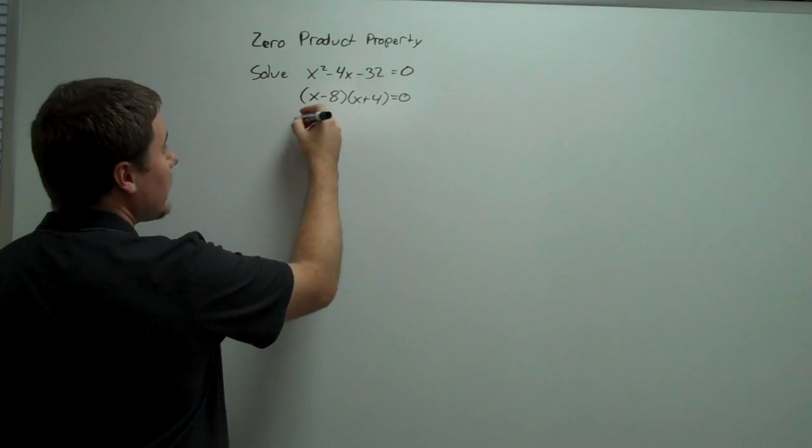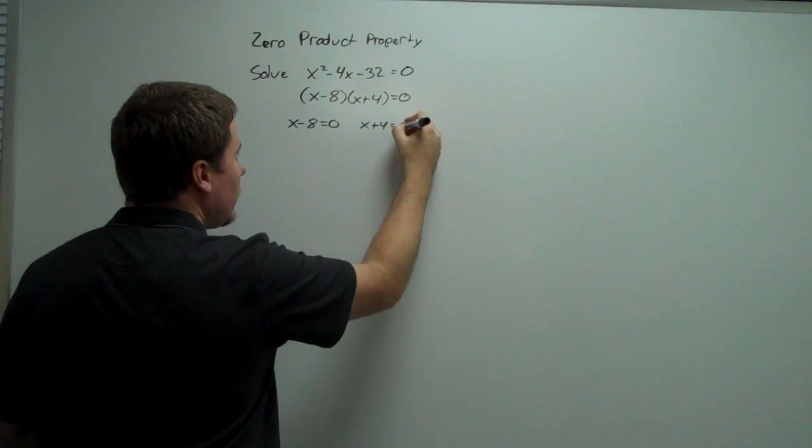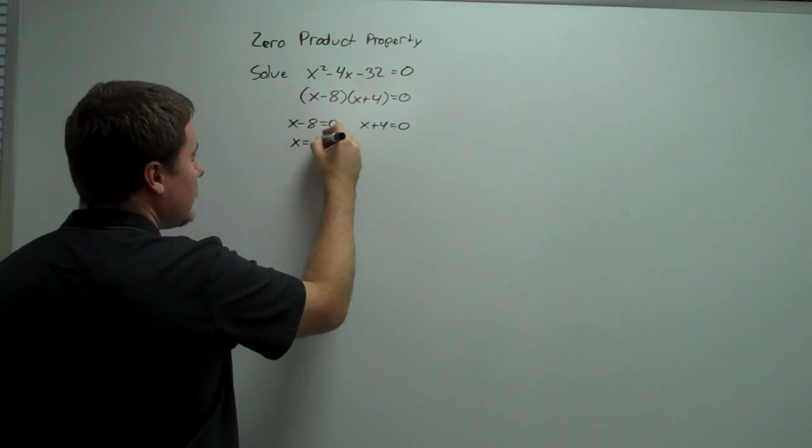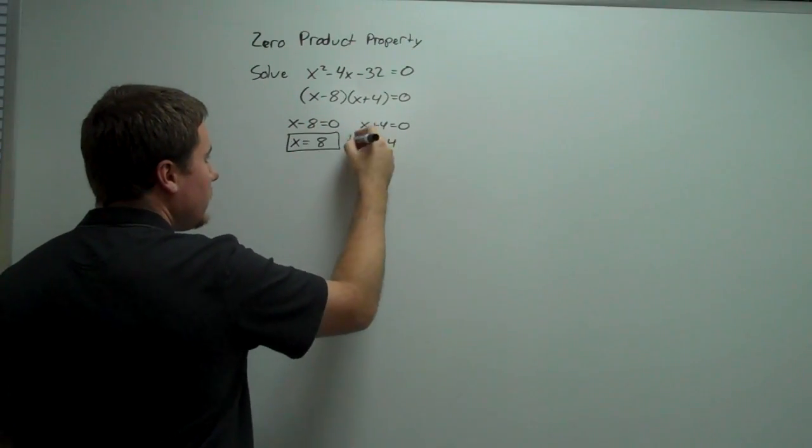So we have x minus 8 equals zero, and x plus 4 equals zero. So x is equal to 8, and x is equal to negative 4. These are my two solutions.